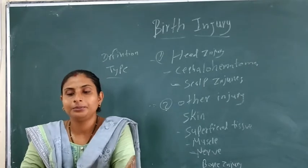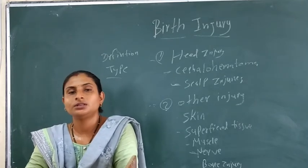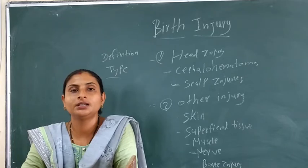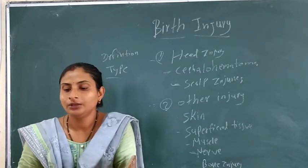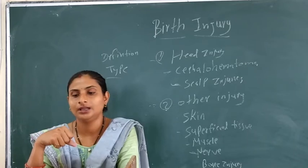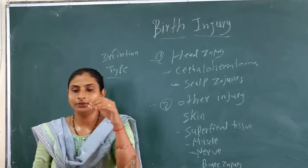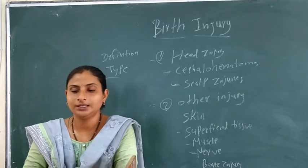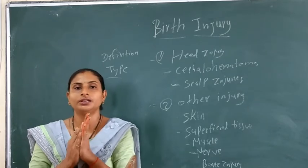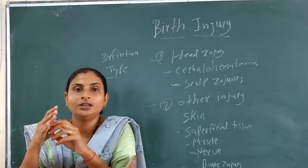Klumpke's palsy involves C7, C8, and T1 nerve roots. The whole arm has paralysis with elbow flexion and wrist extension. Treatment includes applying splints to the forearm in a straight position and surgical nerve repair if needed.